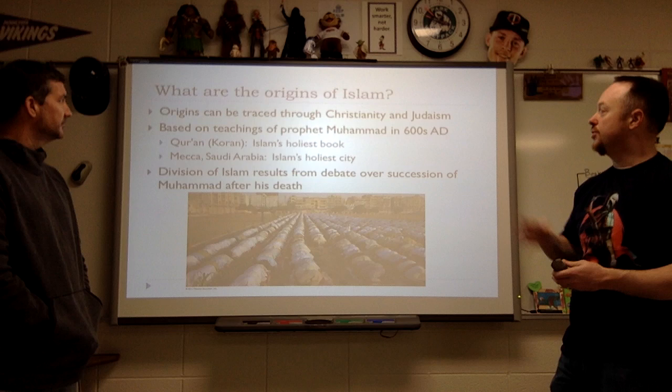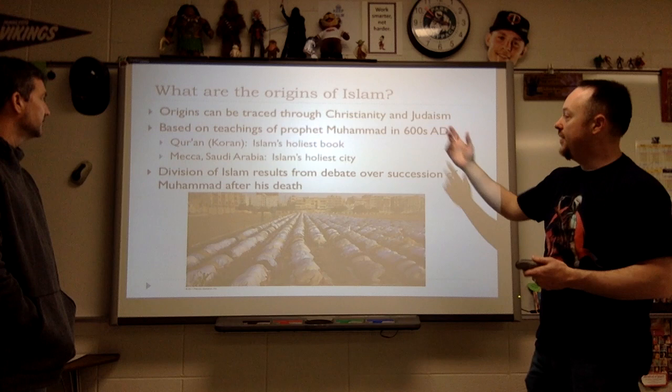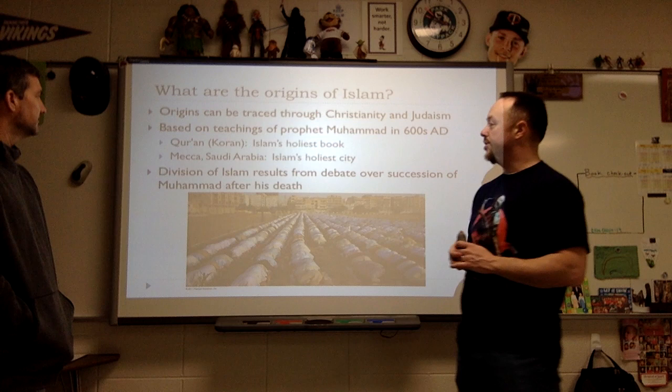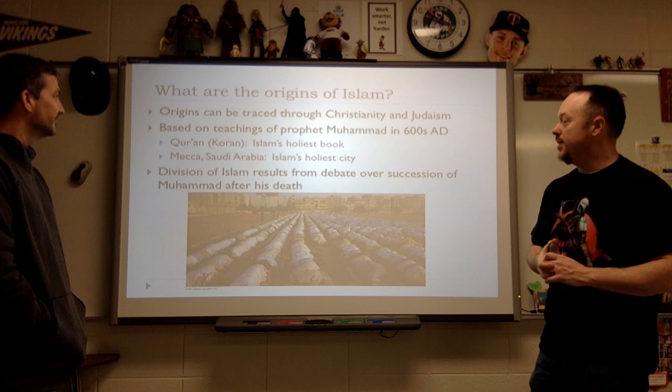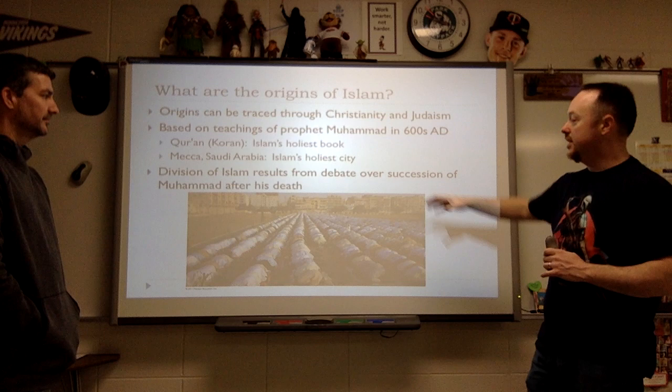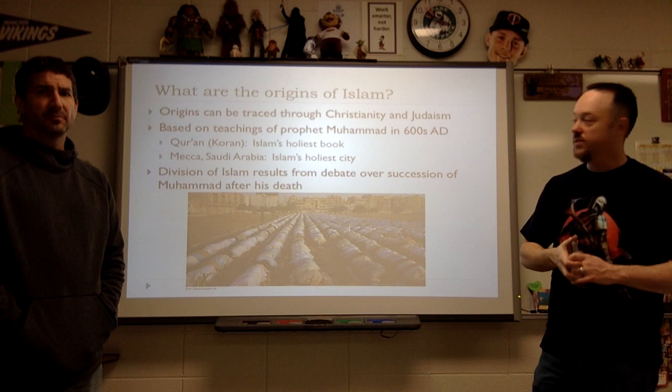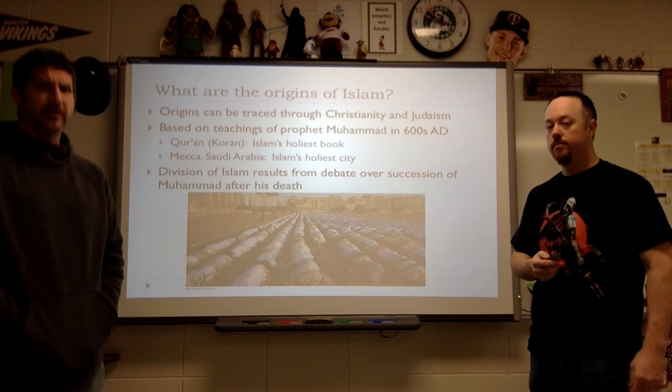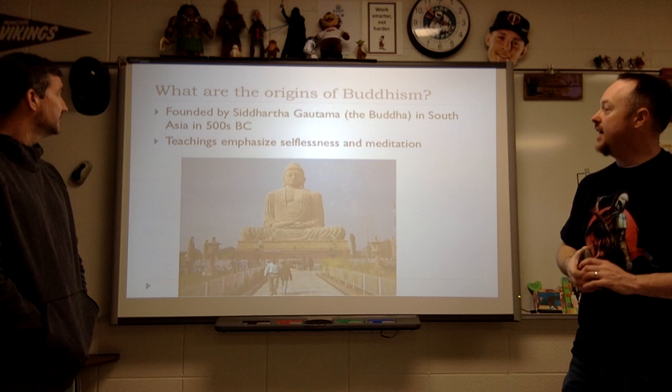Looking at the origins of Islam: it can be traced through Christianity and Judaism — those three religions are all very closely linked. We look at the teachings of the prophet Muhammad and the creation of the Quran, which is supposed to be the word of God written down by Muhammad. It all starts in Mecca, Saudi Arabia, the holiest city. Over time, there was a debate over who would be the successor after Muhammad, and that led to a split — that's where we get the Sunni and Shia branches. Most of the world is Sunni; Shia is very specific in its distribution.